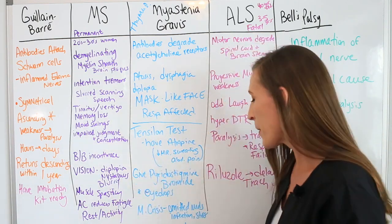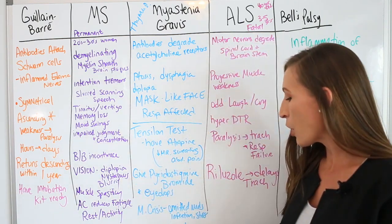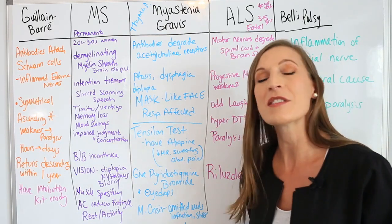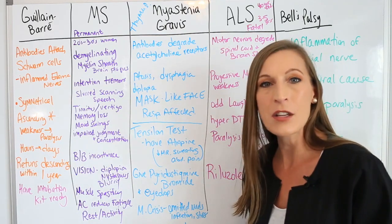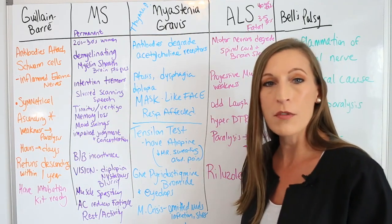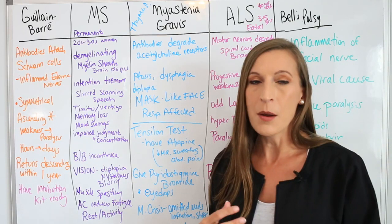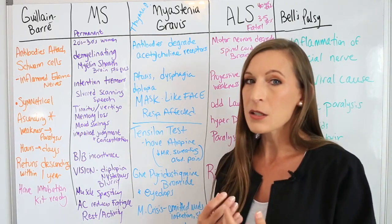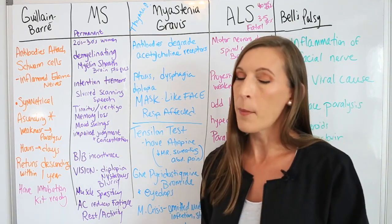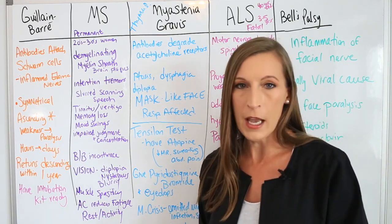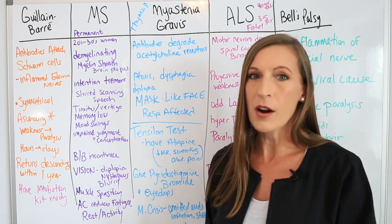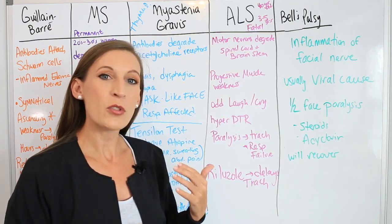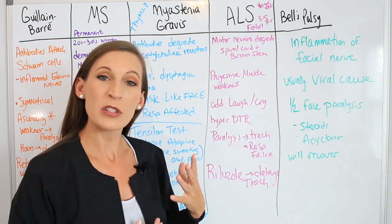For cholinergic crisis overdose, we give atropine as the antidote. Symptoms of too much medication include bradycardia, sweating, abdominal pain, and cramps.